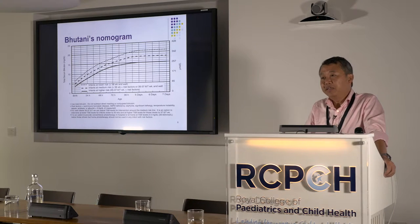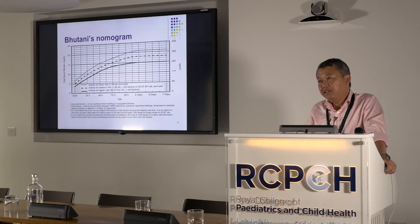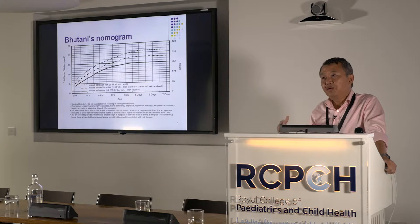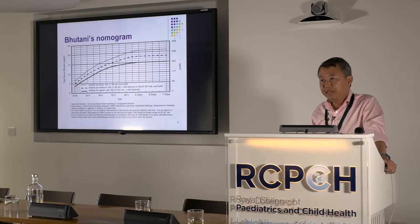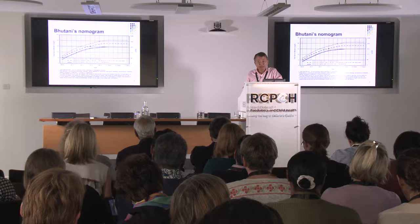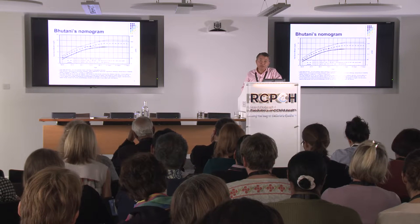I should have said at the beginning — I am a late-comer compared to Kevin and Vinnie because they are the experts on neonatal jaundice. But what is really interesting is that jaundice happens to any newborn baby. We don't need to be worried about every single baby, but as Kevin and Vinnie said, one case of kernicterus is too many. So how do we pick that up, and how do we prevent it?